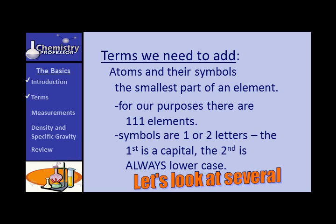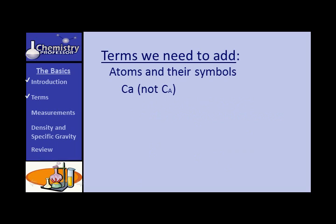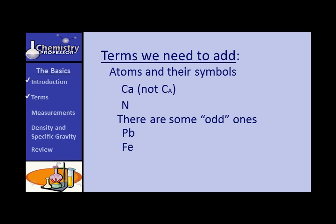Let's look at some examples. How about calcium? Notice: calcium is Ca — that's a lowercase a. You don't use a shrunken capital; that's not acceptable. Then there's nitrogen. And some odd ones: PB for lead, FE for iron, and NA for natrium — that's sodium. And AU for gold, just to name a few.